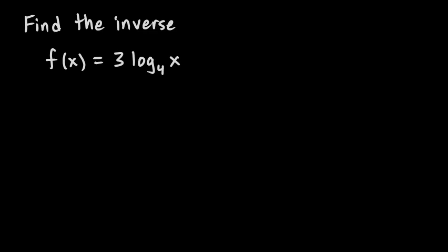In this problem we're told to find the inverse of this function: f of x is equal to 3 times the log base 4 of x. We'll do this with the standard technique of finding the inverse of a function. Instead of the function notation f of x, we use the simple y equals notation. So just rewrite this as y equals 3 times log base 4 of x.